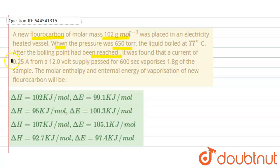it was found that a current of 0.25 ampere and 12 volt supply passed for 600 seconds vaporizes 1.8 grams of the sample. The molar enthalpy and internal energy of vaporization of the new fluorocarbon we need to find.